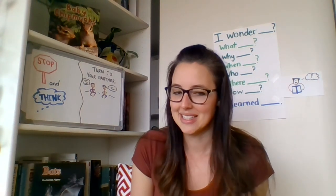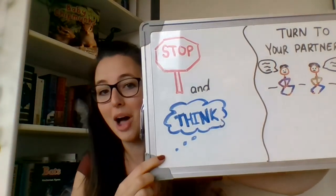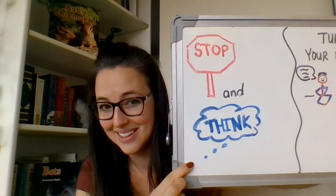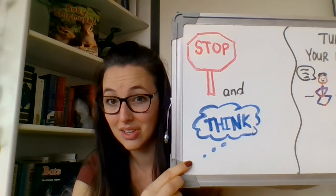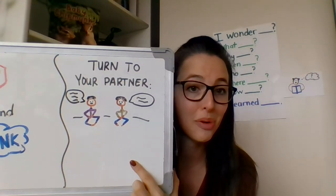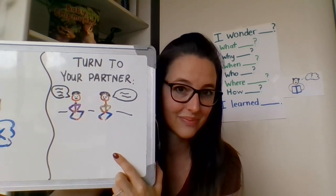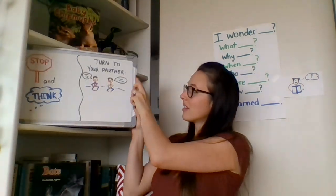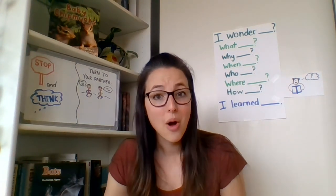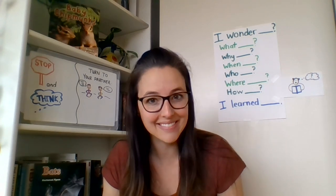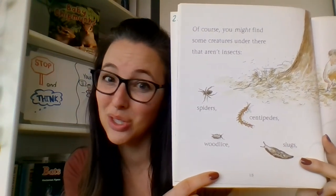What did we learn about insects from this part of the book? We're going to stop and think. All right scholars, using 'I learned,' turn to your partner. I heard some of you talking about how we know if it's an insect or not — whether it has six legs. Spiders, wood lice, centipedes, and slugs do not have six legs, so they are not insects.